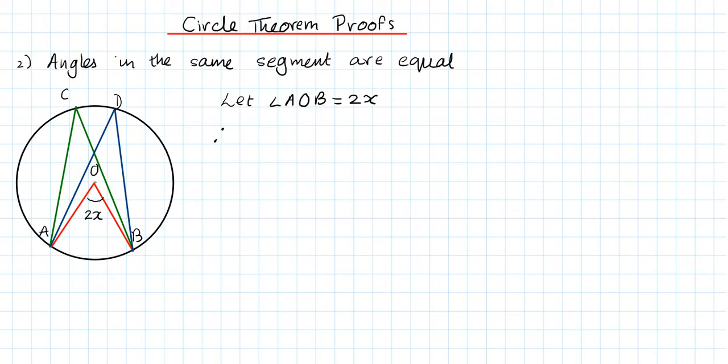Therefore, this angle over here, angle ACB, will be x, half of it. And the reason for that is the angle at the center is double the angle at the circumference.